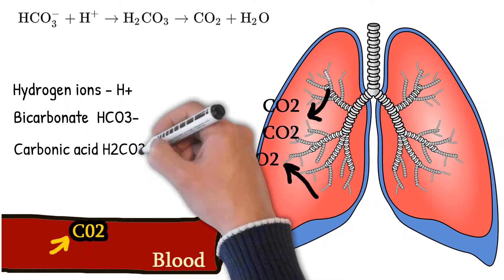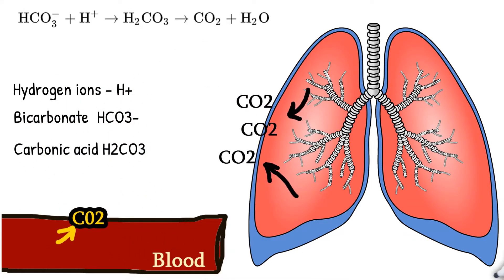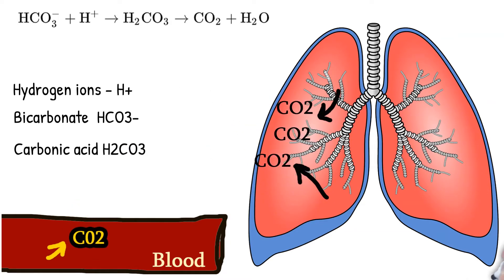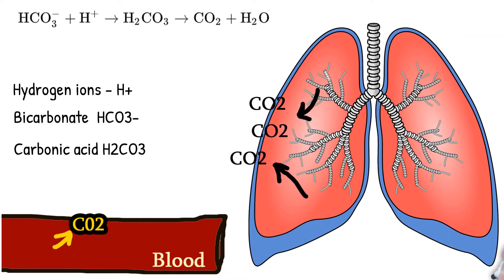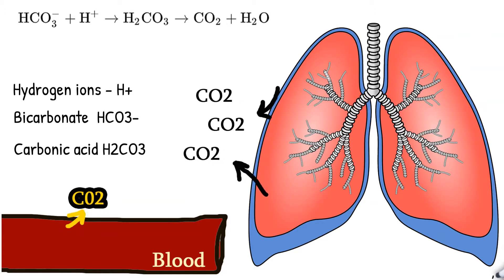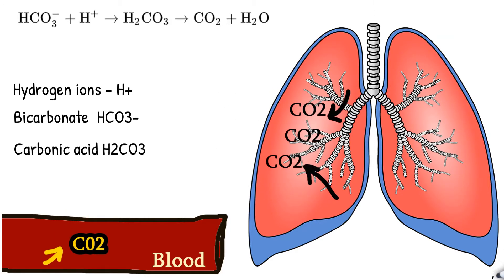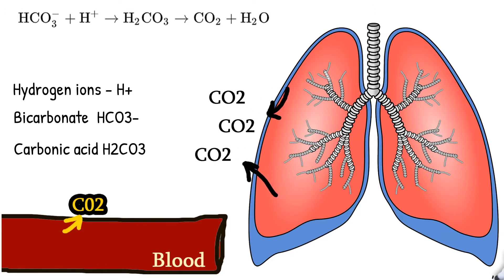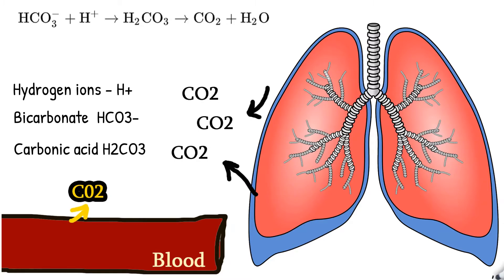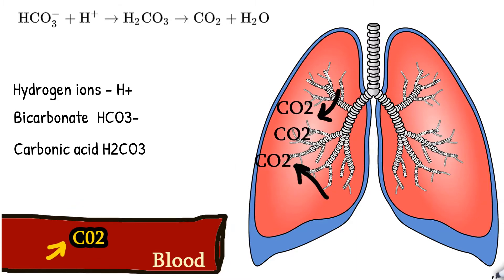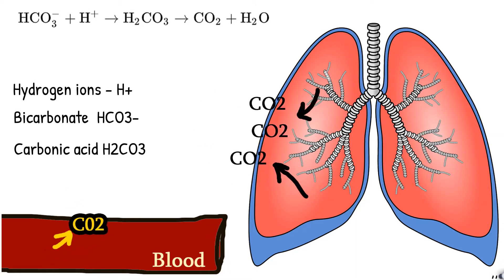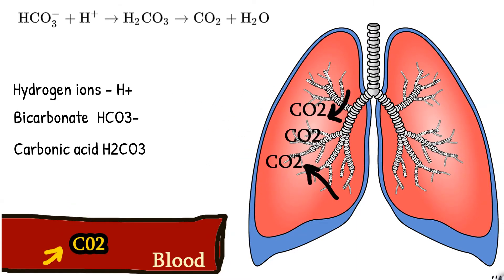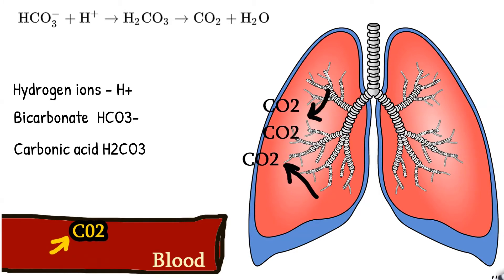The body tries to compensate for the reduced concentration of CO2 in the blood. Circulating hydrogen ions and bicarbonate are shifted through the carbonic acid to make more CO2 and water, via the enzyme carbonic anhydrase. This causes decreased circulating hydrogen ion concentration and increased pH, resulting in alkalosis.